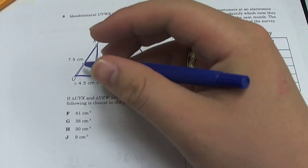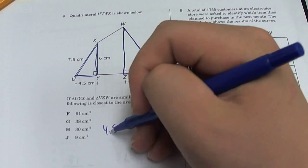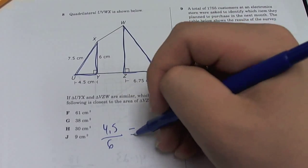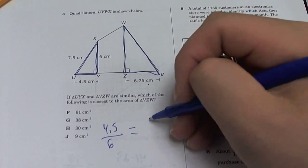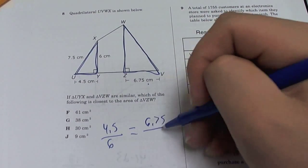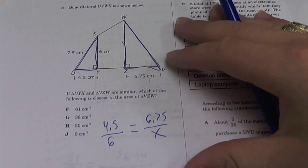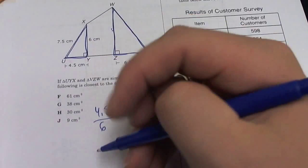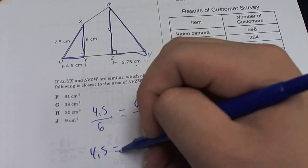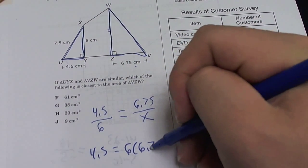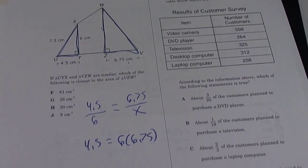So for the smallest triangle, our base is 4.5 to 6. Now put the base on top over x. So you're going to solve for x. We cross multiply. 4.5x is equal to 6 times 6.75.